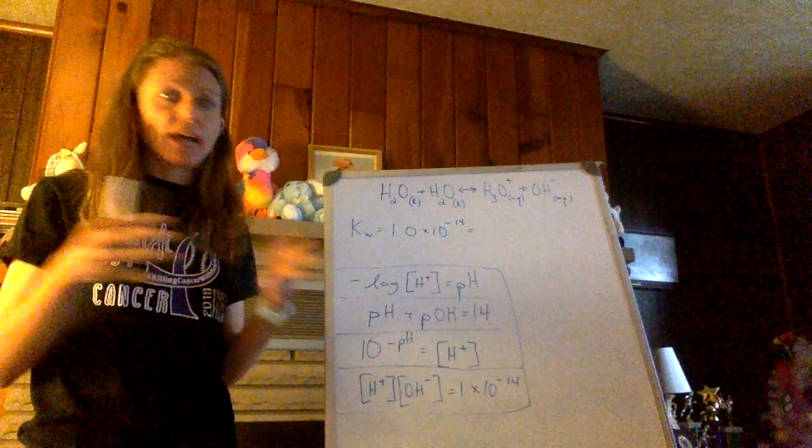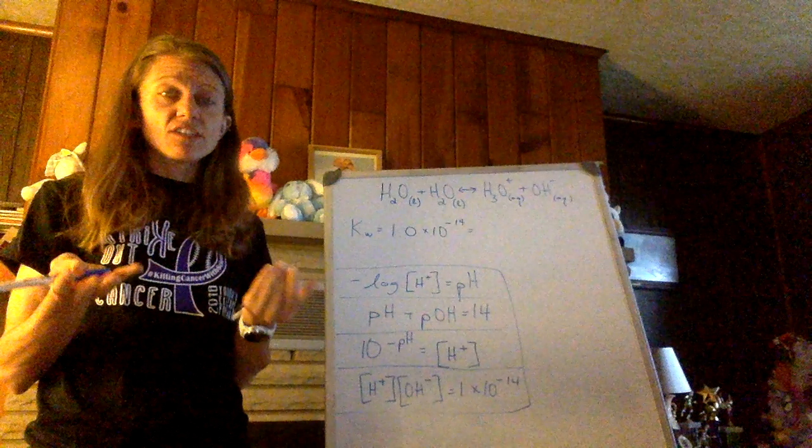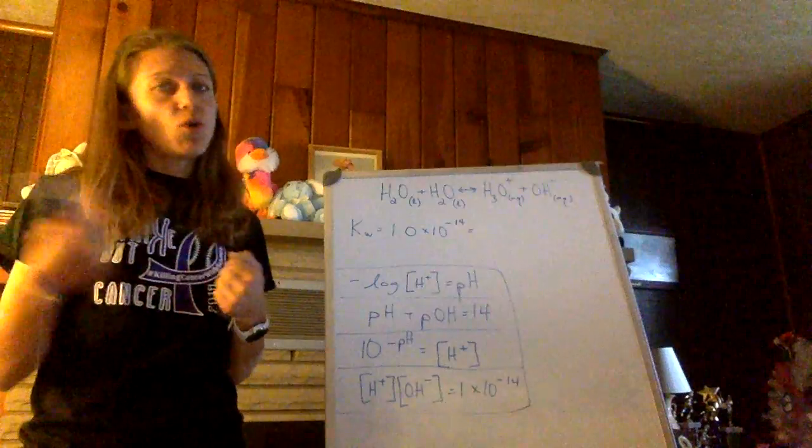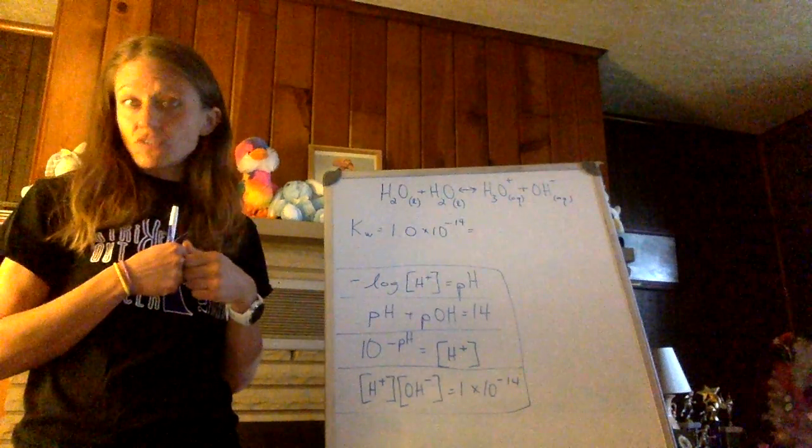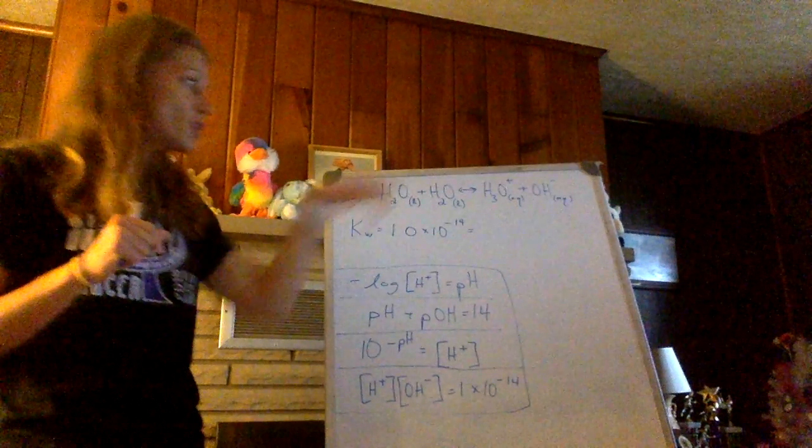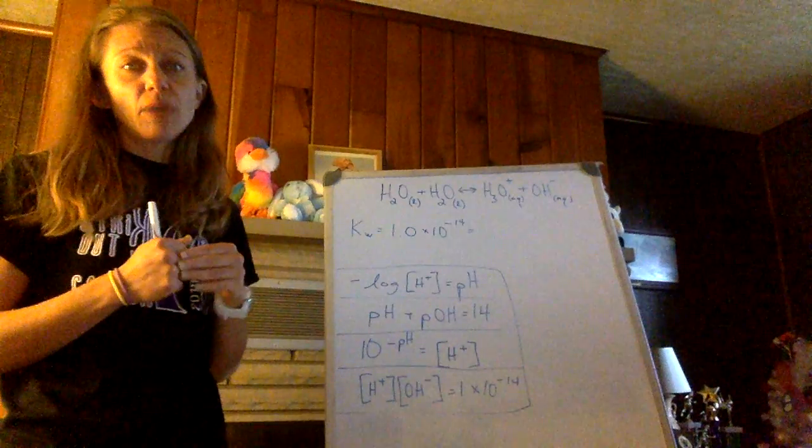So you get a balanced equation, but if you look, you can see in your packet I showed you water acting as a Bronsted-Lowry acid by giving up a proton. You can see water acting as a Bronsted-Lowry base by taking a proton. You have one water molecule acting as an acid with another water molecule acting as a base.